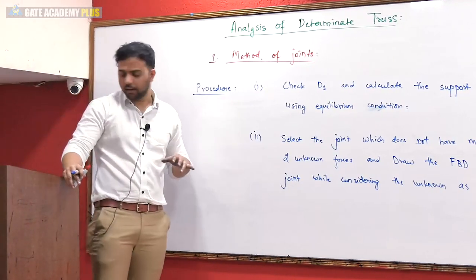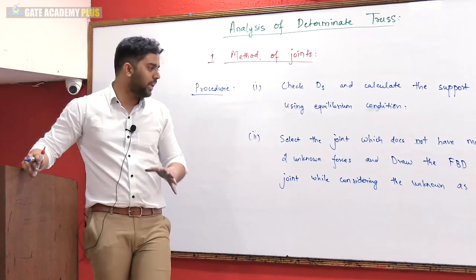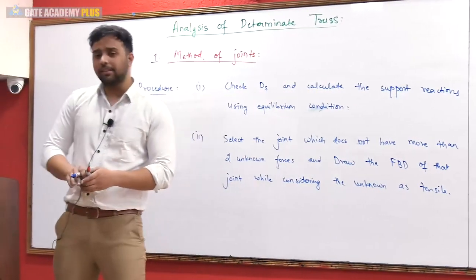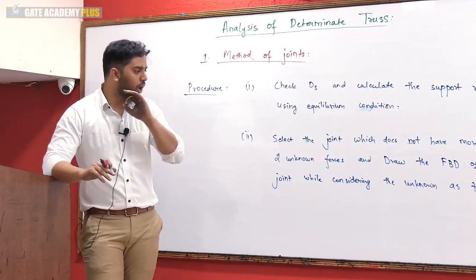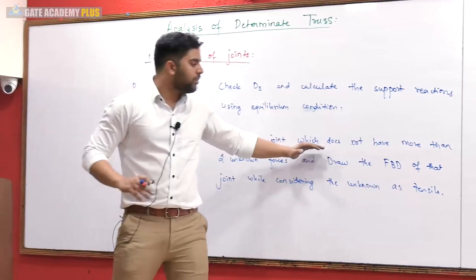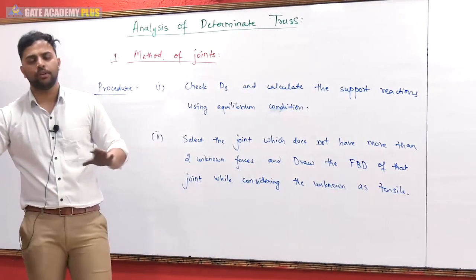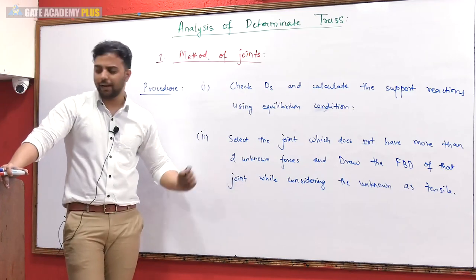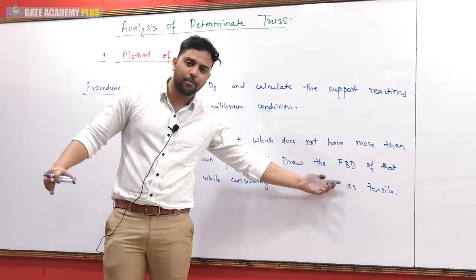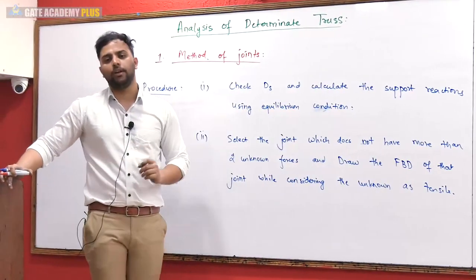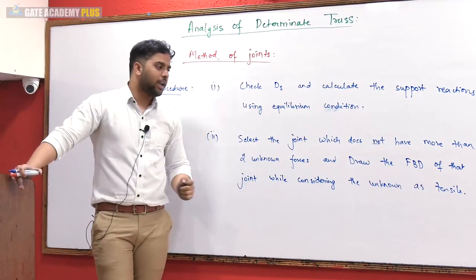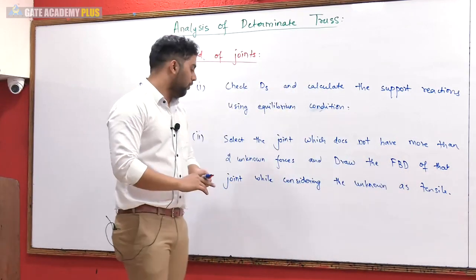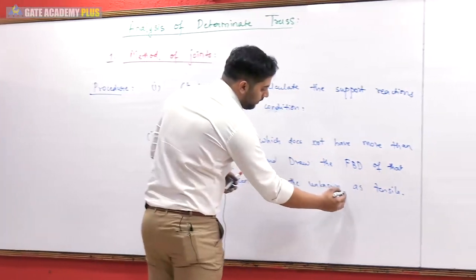This is a very important point. You need to select a joint, draw its free body diagram, and all unknown forces should be assumed as tensile — that is, away from the joint. Tensile forces are taken as positive and compression forces as negative.